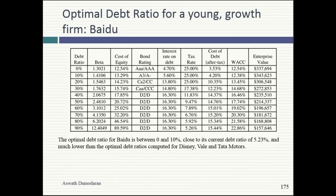That doesn't mean Exxon Mobil is going to go bankrupt — they have no debt. But 70% of oil and commodity companies that borrowed on a normalized price thought they were doing the sensible thing. They're now going to discover that what they thought was normal was not. Then I tried the optimal debt ratio for Baidu — about 5%. Why so low? It makes money. But take the value of the company: if you're a high-growth firm, the market rewards you with a high value. 10% of that big value is a big debt number. What do you have to service that debt with? Cash flows from existing assets.